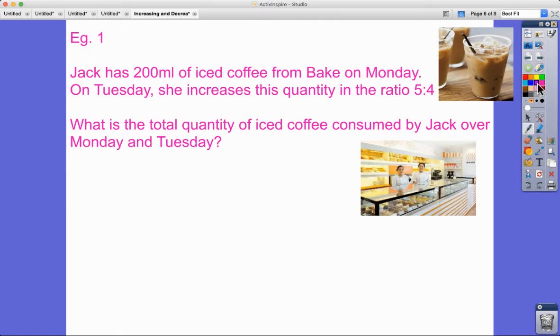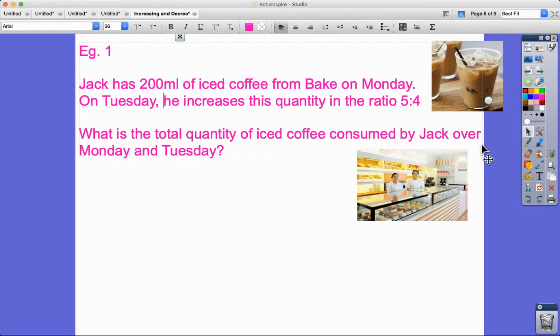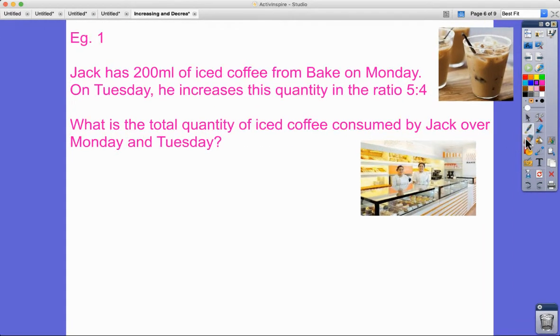Example 1: Jack has 200 millilitres of iced coffee from a cafe on Monday. On Tuesday, he increases this quantity in the ratio 5 to 4. What is the total quantity of iced coffee consumed by Jack over Monday and Tuesday?